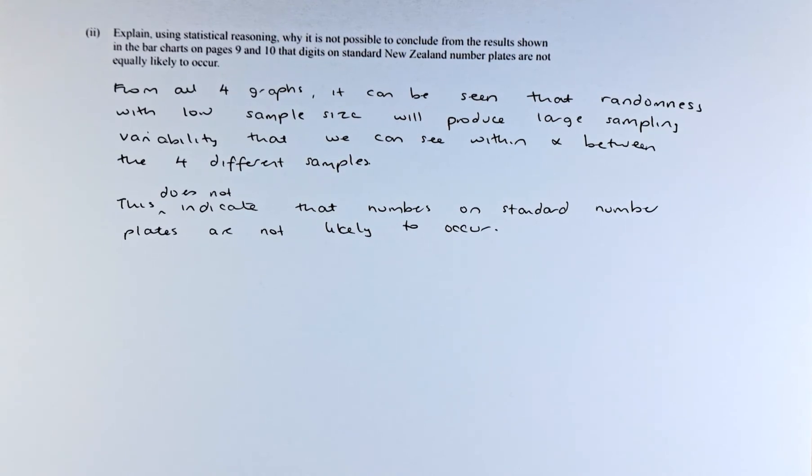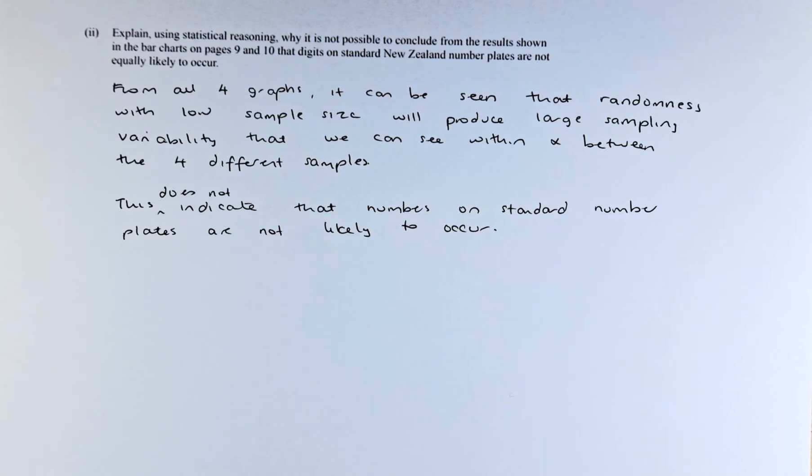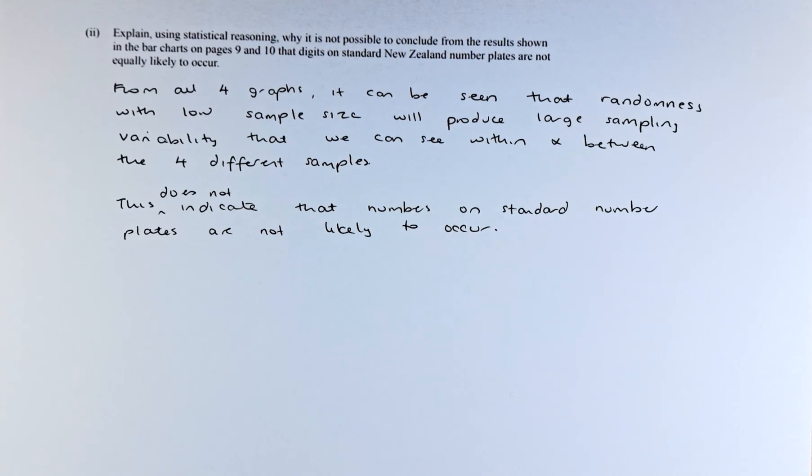Okay, from all four graphs, question 3A and the 3 graphs in 3B, it can be seen that there is a lot of randomness due to the low sample size that will produce a large sampling variability that we see within and between the four different samples. So this does not indicate that the numbers on standard number plates are not likely to occur.